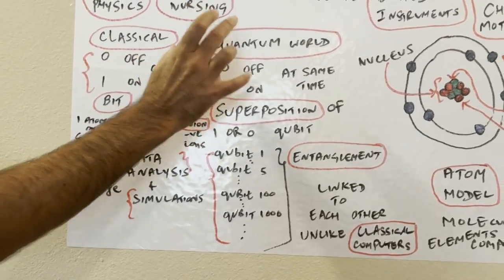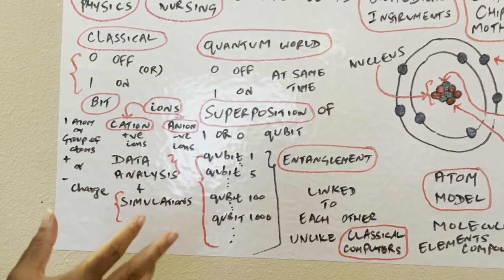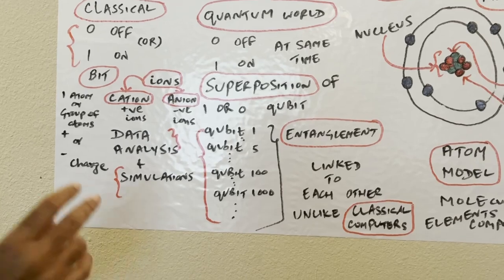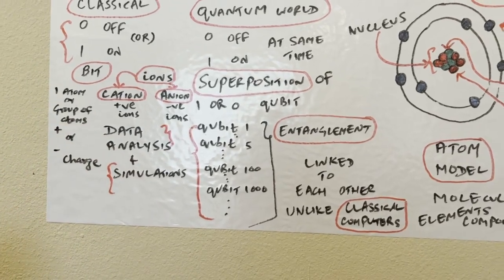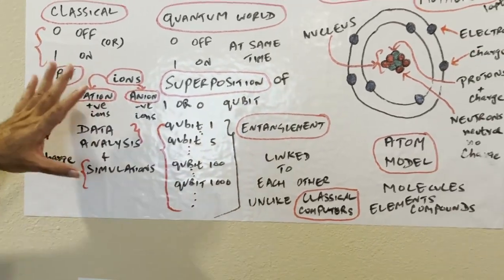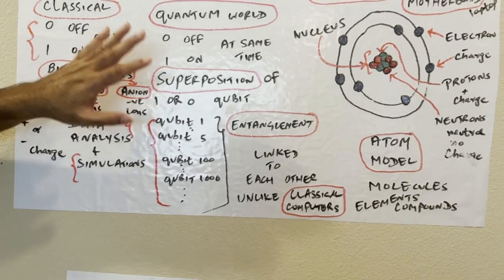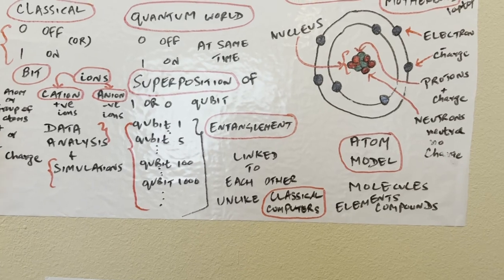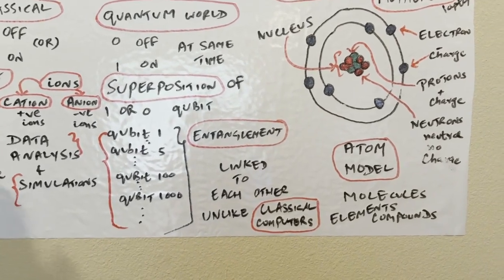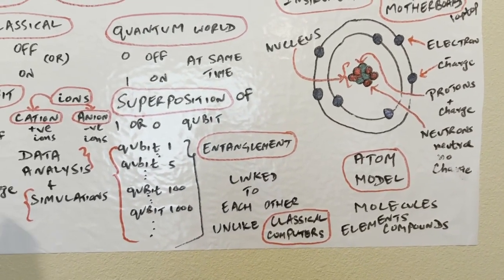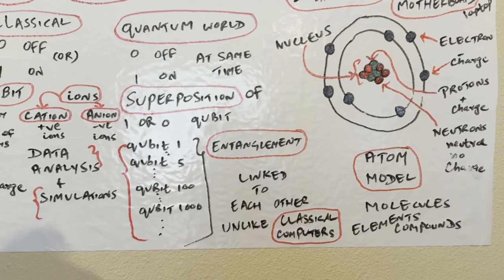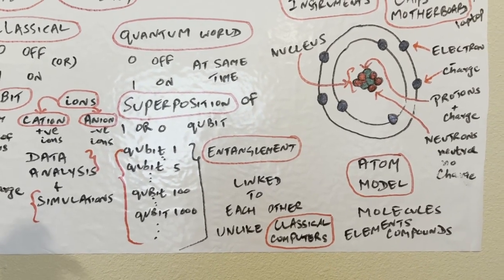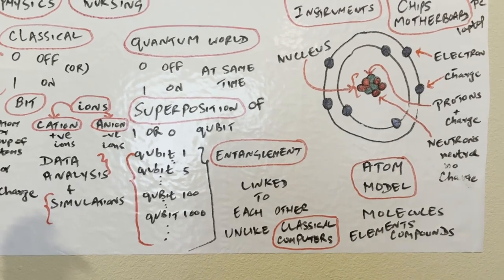All these ions, atom concepts are used in the quantum computing for classical and quantum, mostly in quantum since it's very powerful. It's used in data analysis, simulations. It will do the computations very, very fast. That's one of the advantages of the quantum computers. In the next video I'll explain more about applications and other uses of quantum computers. Please watch the other videos too. I have many videos for math, science, reading, space. Thank you.